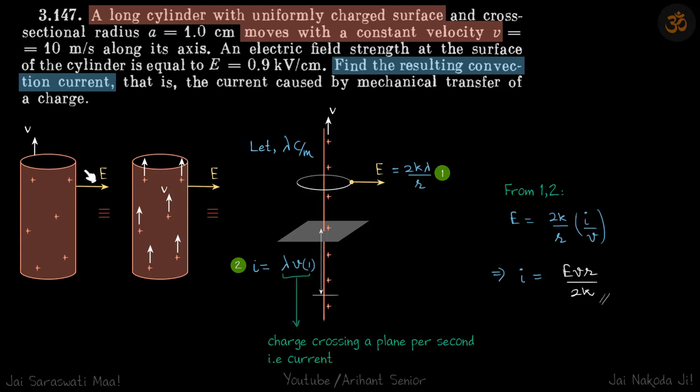Till now we have just manipulated the diagrams and what we already know is that electric field at the periphery can be written as 2k lambda by R.